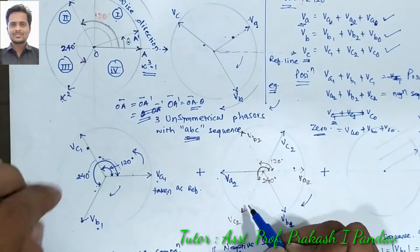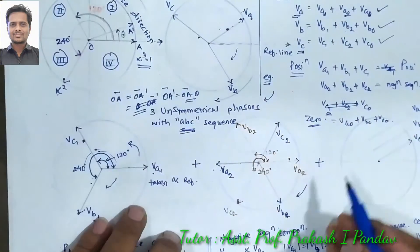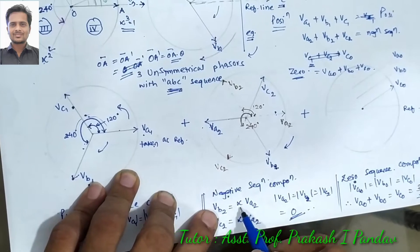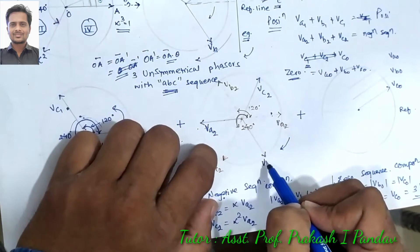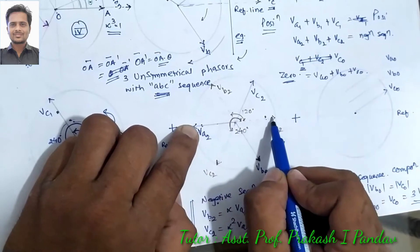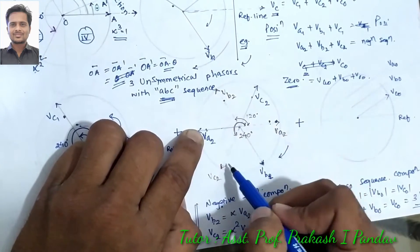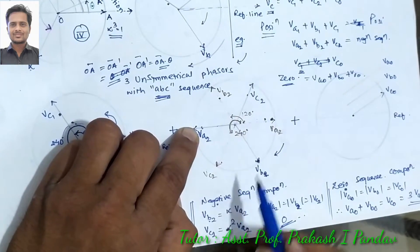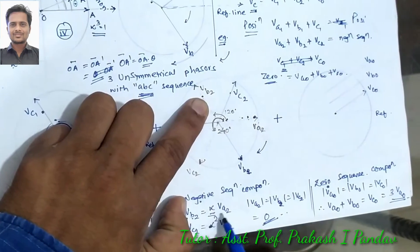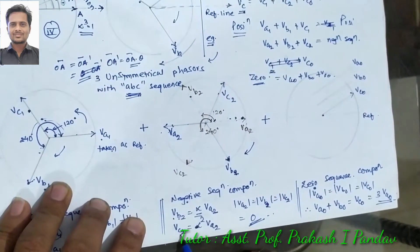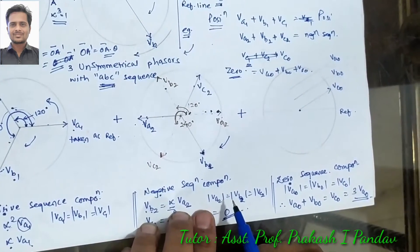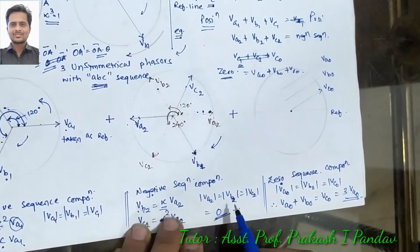So for the negative sequence in ACB: VB2 equals alpha into VA2, corresponding to 120 degrees. Similarly, VC2 equals alpha squared into VA2, corresponding to 240 degrees. One important thing to note is that the magnitudes are the same but directions are opposite, so if we add both together, the result is zero.